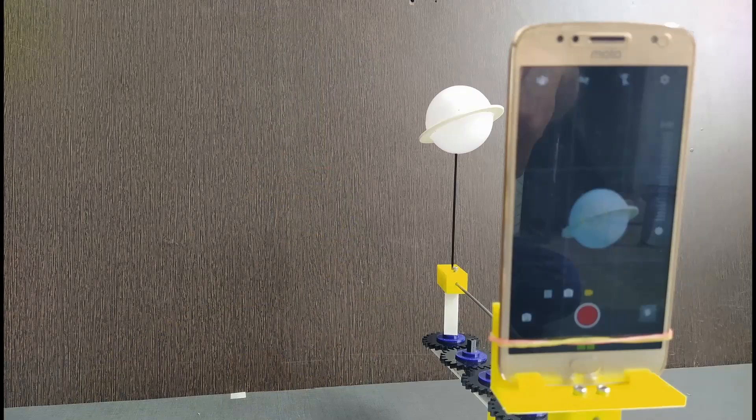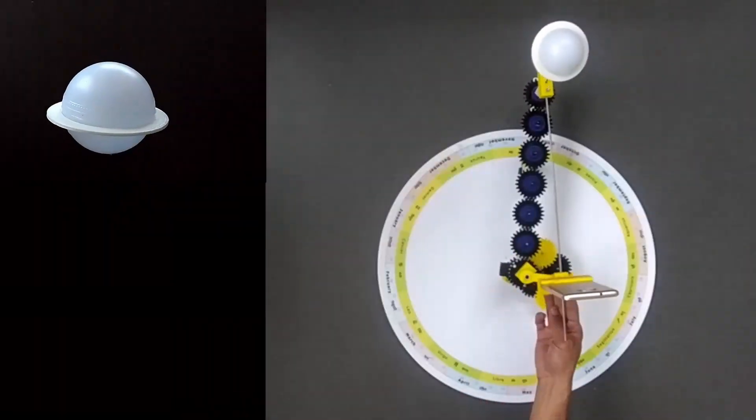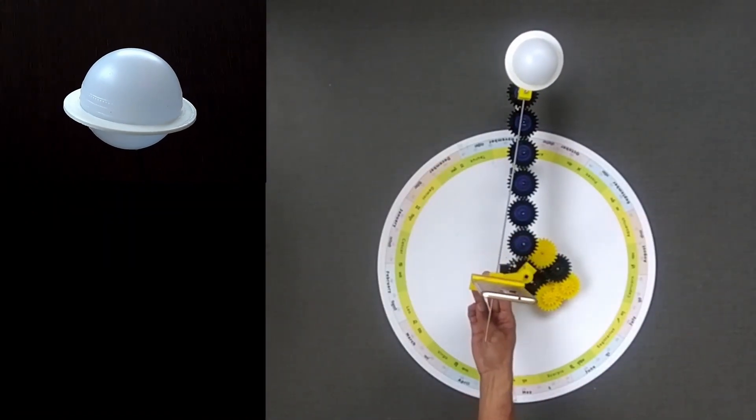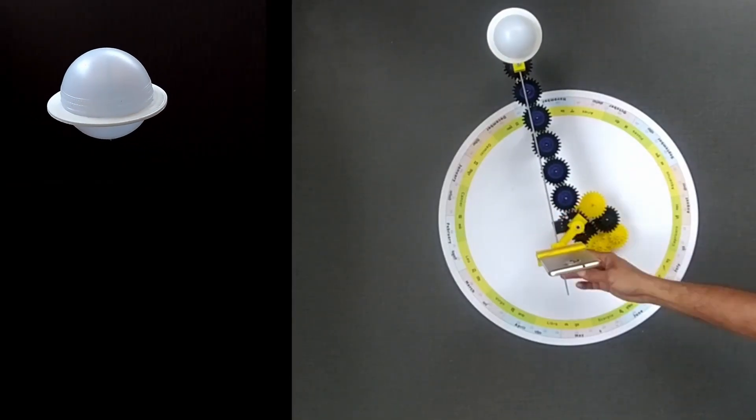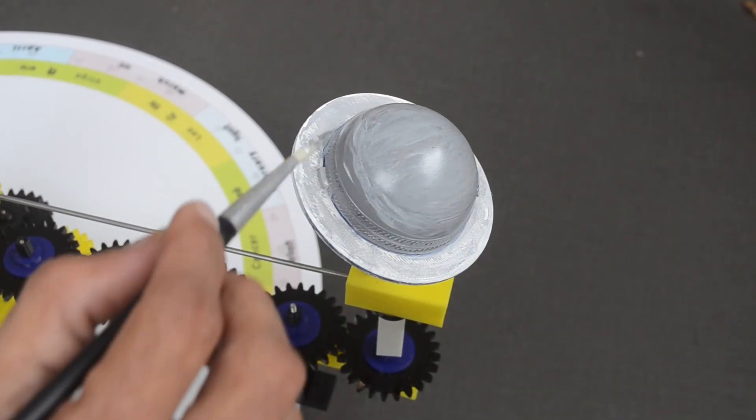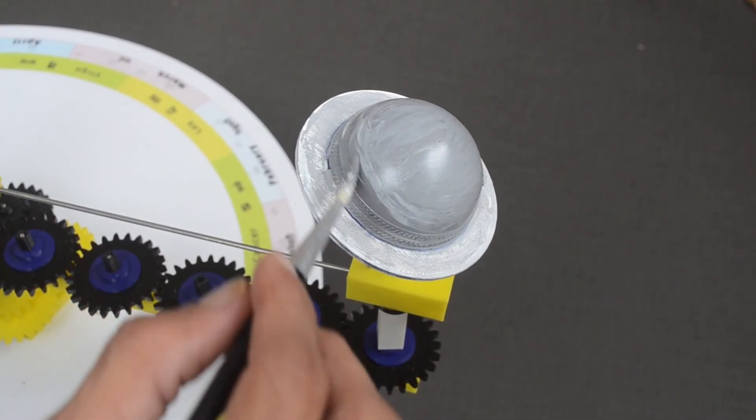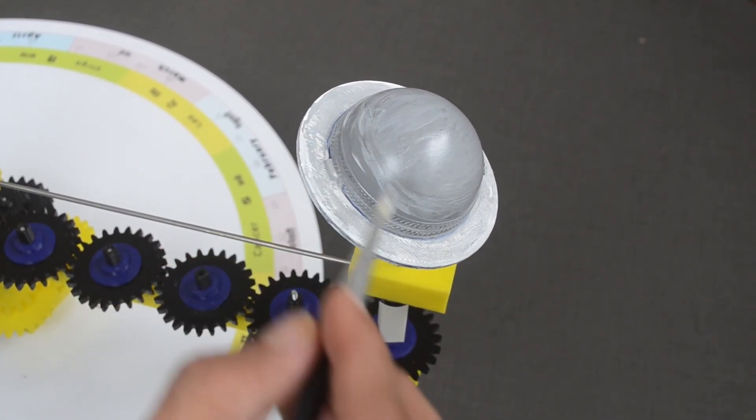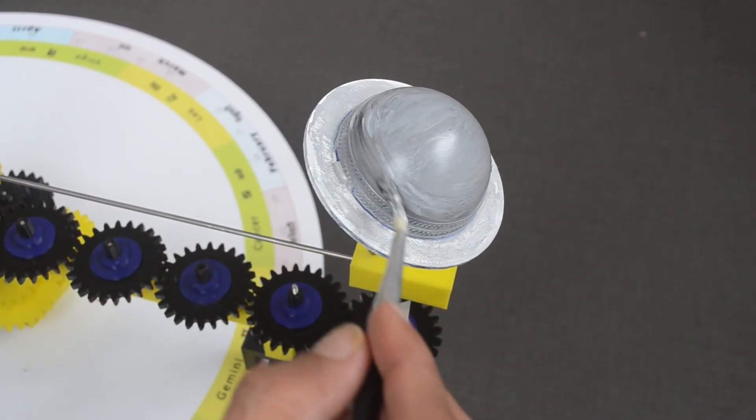Instead of GoPro camera, smartphone can also be mounted in the place of earth. I found this arrangement slightly bulkier and difficult to handle. I had to paint a white ball with gray shade as totally white ball was difficult to capture in the video frame.